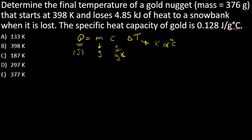Let's find the given values from the problem. The mass is given as 376 grams. I don't need to do any conversion—it's given in grams and the equation needs grams. It starts at 398 Kelvin, so this is T initial.